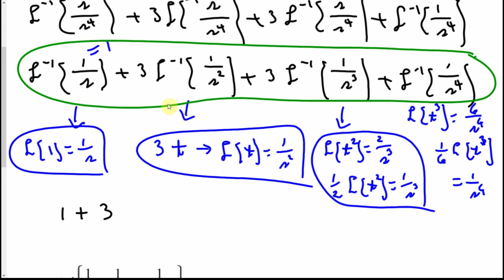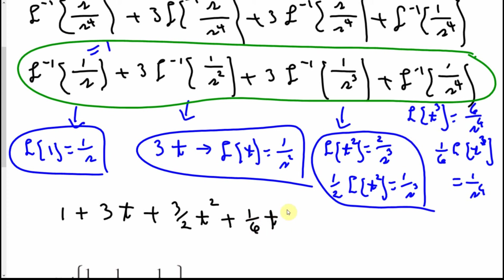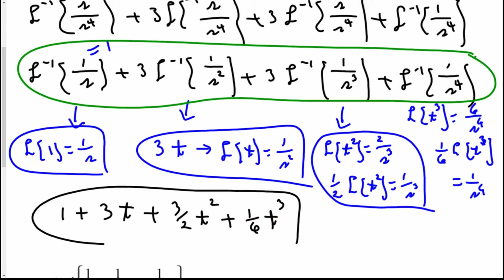Combining all parts: the inverse transform of (s+1)³/s⁴ equals 1 + 3t + (3/2)t² + (1/6)t³.